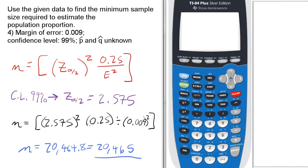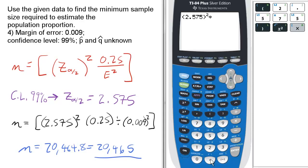Now, the actual n, we're going to enter it using parentheses, so it's 2.575 quantity squared times 0.25.